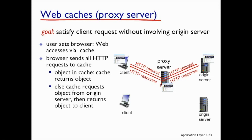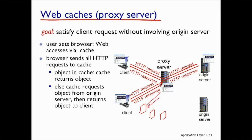The proxy server will also maintain a copy of the object at itself. So next time, if another client comes in and requests the same object, the proxy server will not forward the request to the original server — it will return the cached reply. If we have many such clients trying to access the same object, every time we do not need to forward it to the original server.